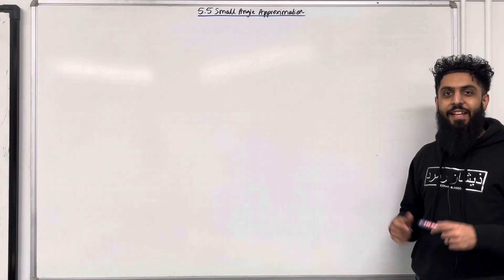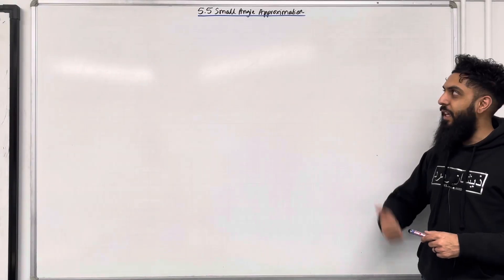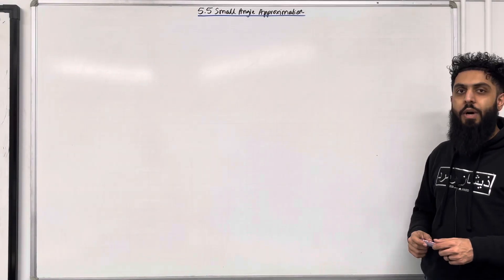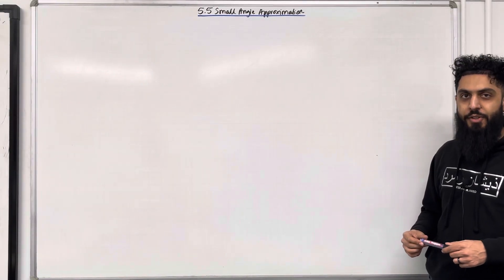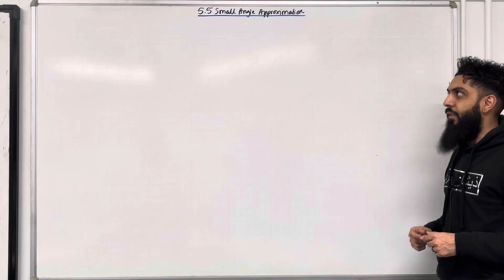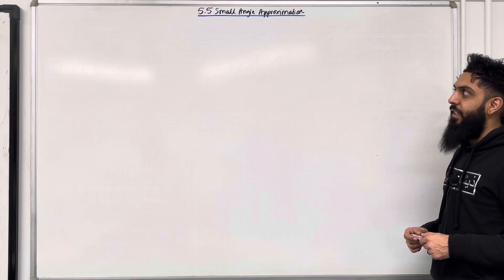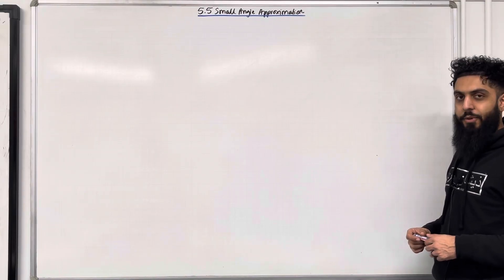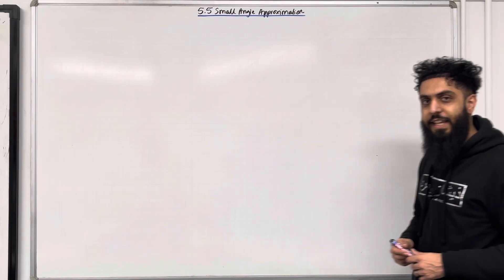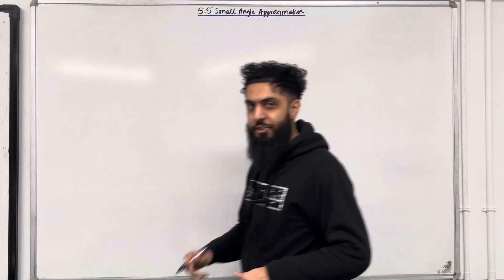Welcome back. In this teaching video I'll be looking at 5.5 small angle approximation. 5.5 represents chapter 5 section 5 of the Pearson A level Maths year 2 textbook. Let's go through the key facts of this section.